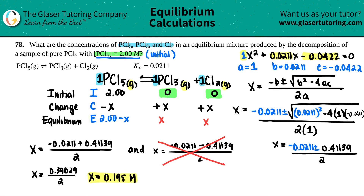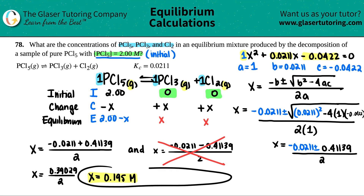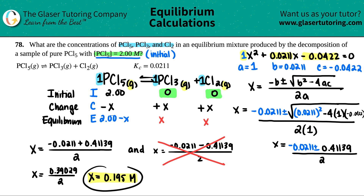Some of you may have a quadratic equation program in your calculator that does all this math — just plug in a, b, and c. That's fair game. It will show you both answers; always pick the positive one.